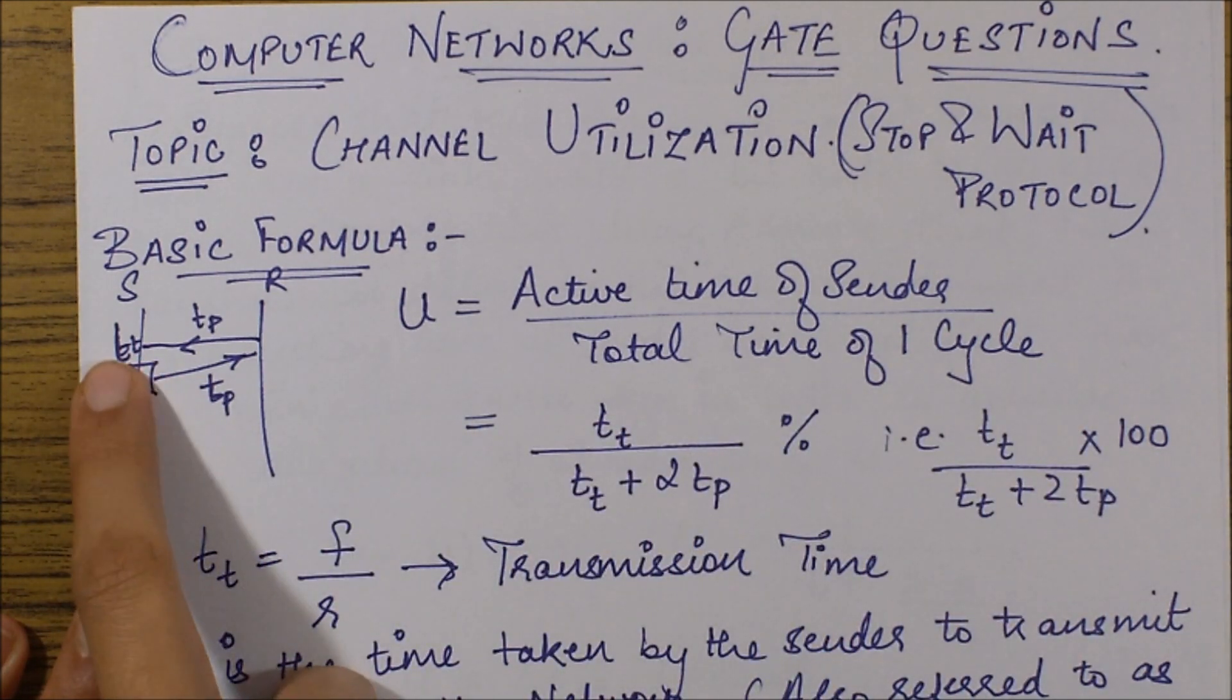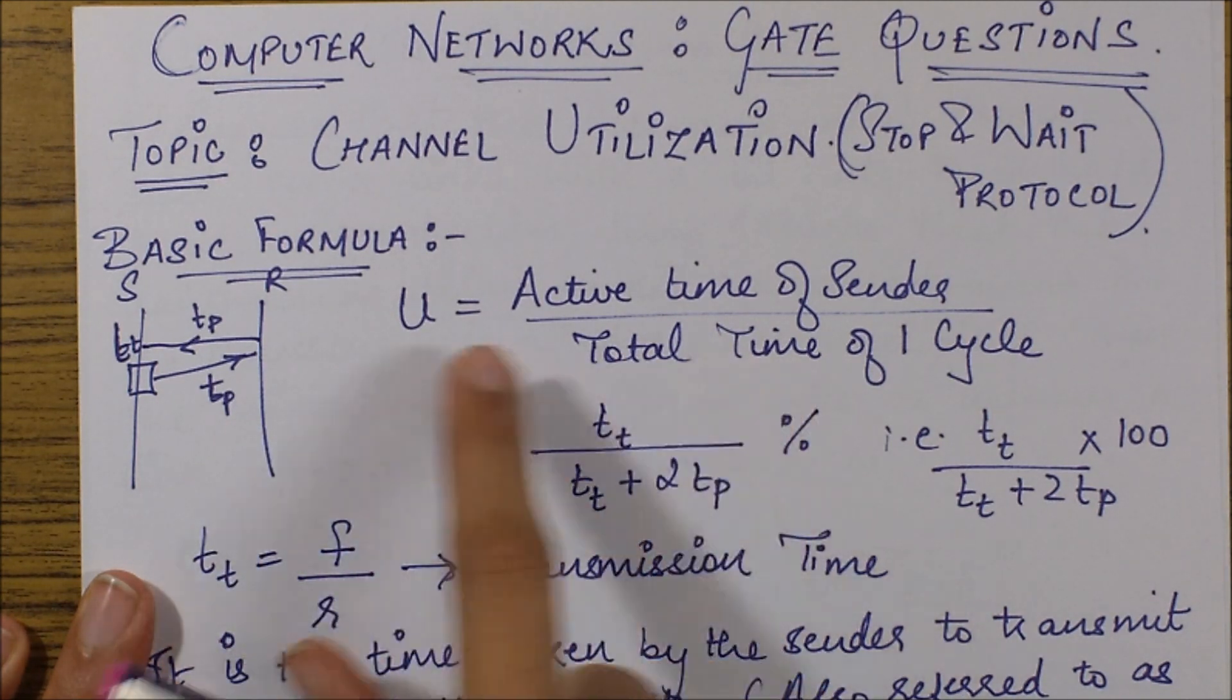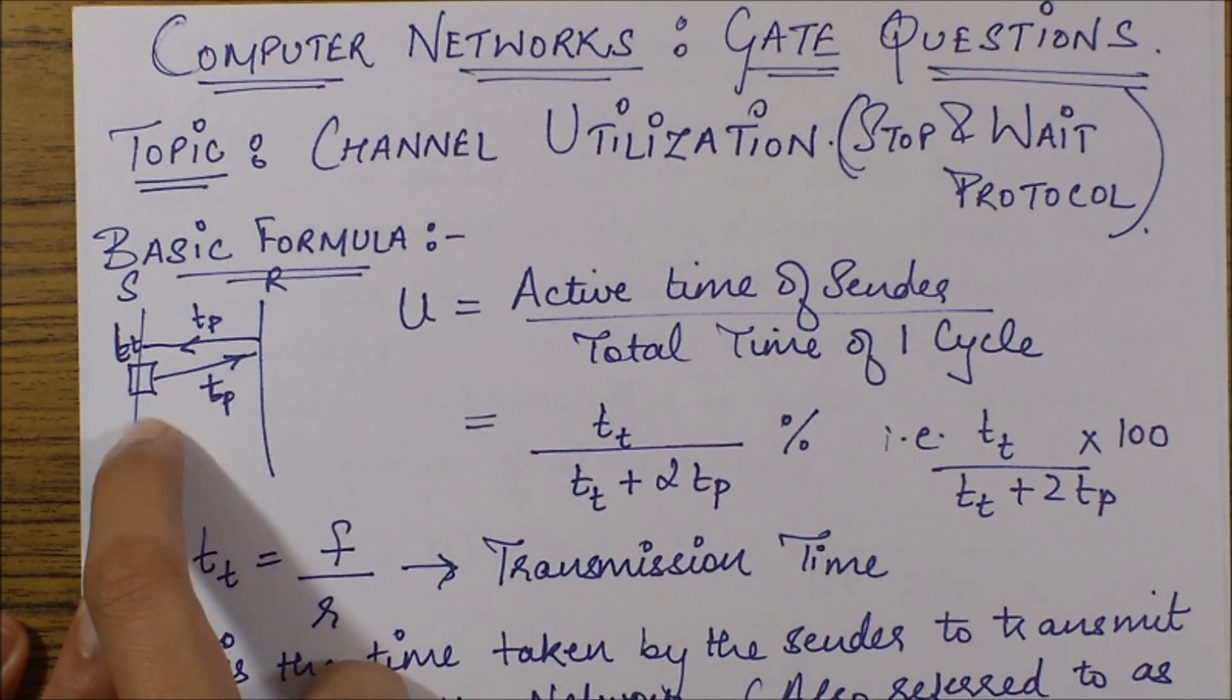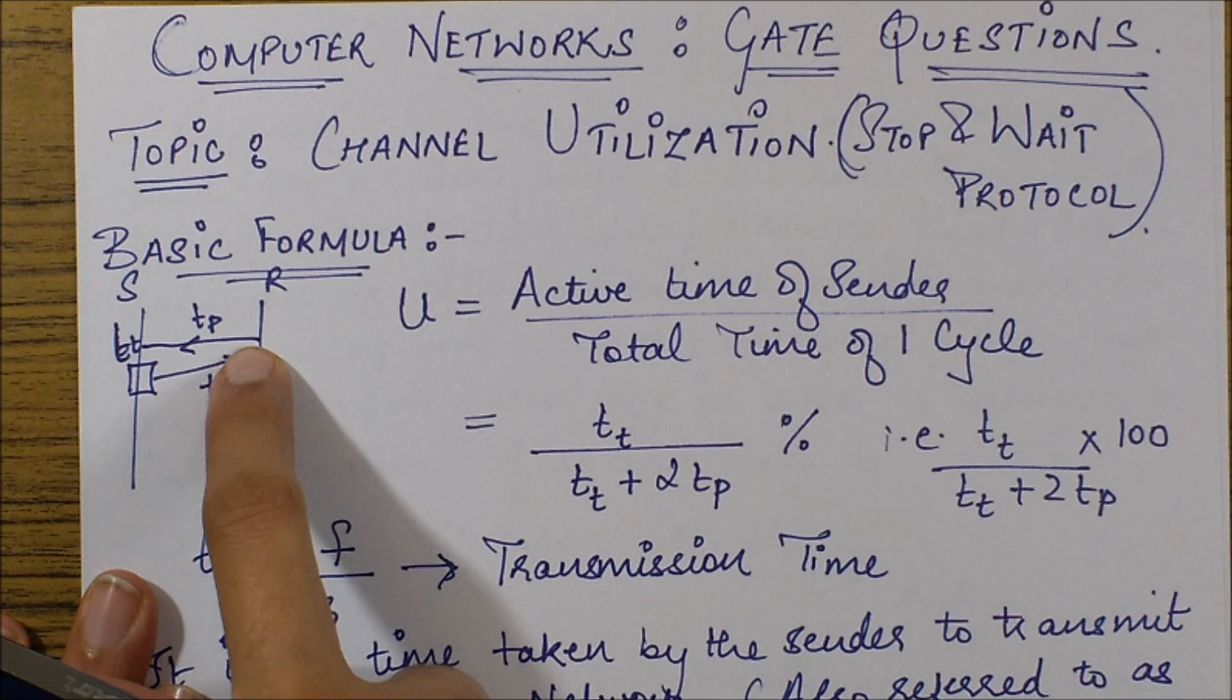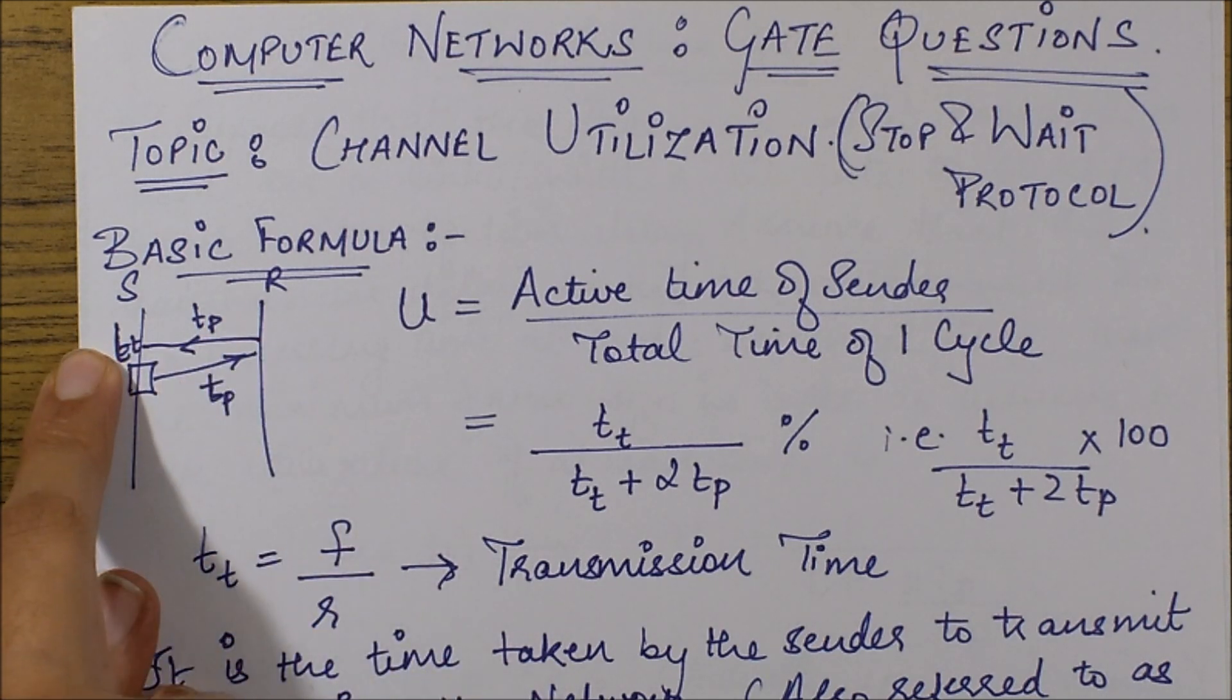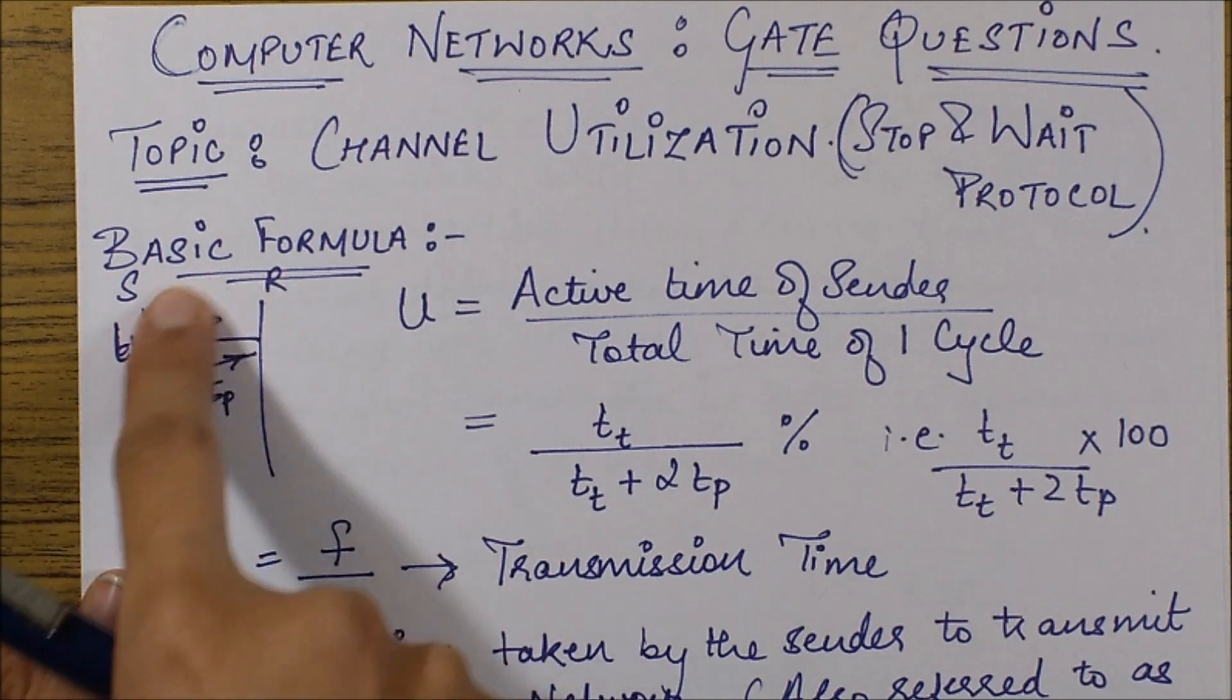When I start the cycle, I transmit my frame, so my tt (transmission time) comes into consideration. Then I propagate it from sender to receiver, then from receiver to sender the acknowledgement comes back. This entire time period comes under my total time of one cycle.